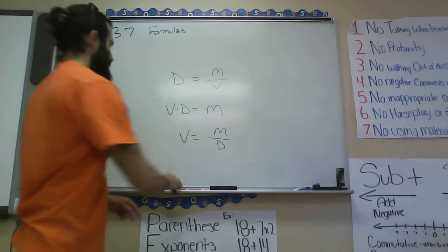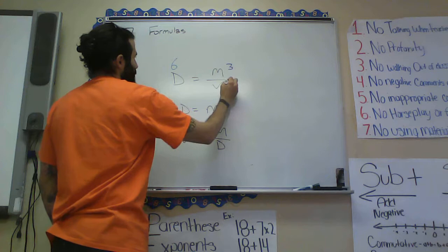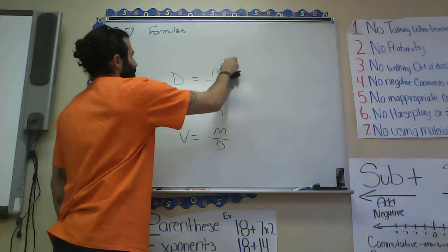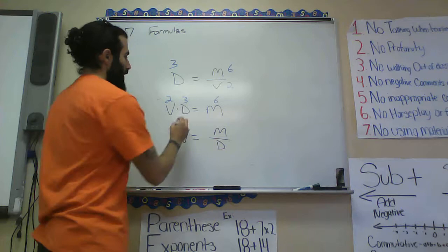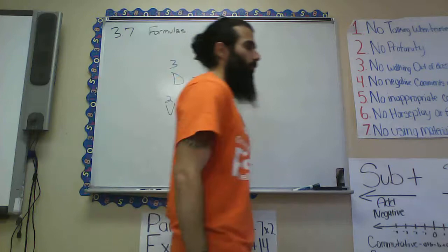For example, if density is 3, mass is 6, and volume is 2, you can plug into any version: 2 times 3 equals 6, and 2 equals 6 divided by 3. It works any way you rearrange it.